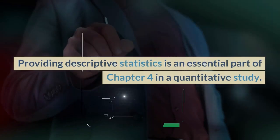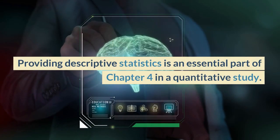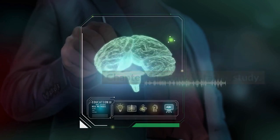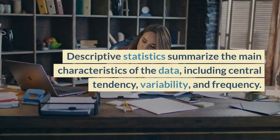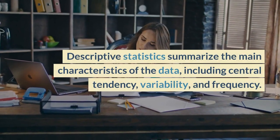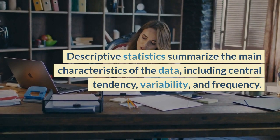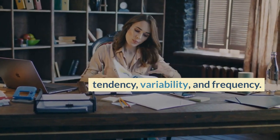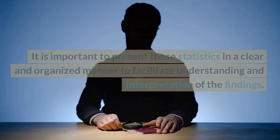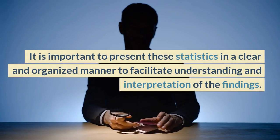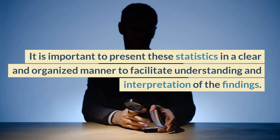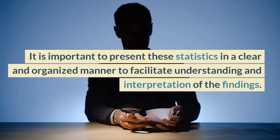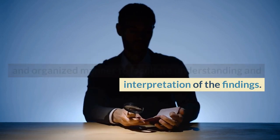Providing descriptive statistics is an essential part of Chapter 4 in a quantitative study. Descriptive statistics summarize the main characteristics of the data, including central tendency, variability, and frequency. It is important to present these statistics in a clear and organized manner to facilitate understanding and interpretation of the findings.